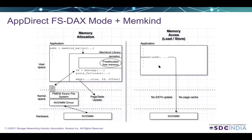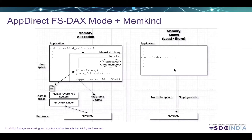Now let's look at memory access in FSDAX mode — that is, reading or writing to the persistent memory device. When memory is already allocated and we are writing to that device, since we already enabled the direct access flag, there is no kernel page cache involved. That write will go directly to the PMEM device, just like writing to DRAM. Also, since the memory is already allocated, there is no EXT4 update. So in summary, in FSDAX mode, memory access is similar to DRAM — the only difference is device latency.